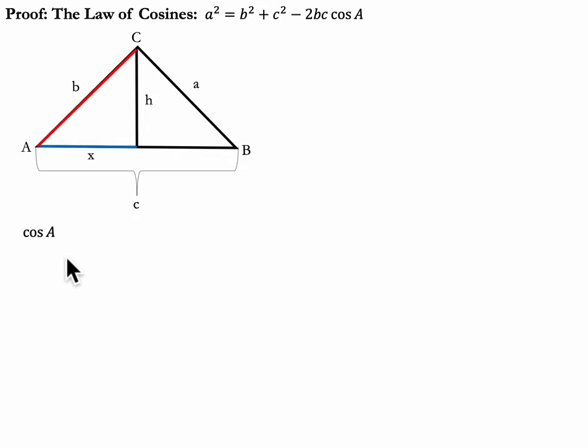All right. So the cosine of an angle is the adjacent side over the hypotenuse. Since this is a perpendicular right here, we can assume these are right angles and we've got a right triangle. So the cosine of A is x over b. And then, play with that equation and rearrange it. Multiply both sides by b. Is it going to help us? Maybe. Because now we know what x equals. I feel like we're getting somewhere.